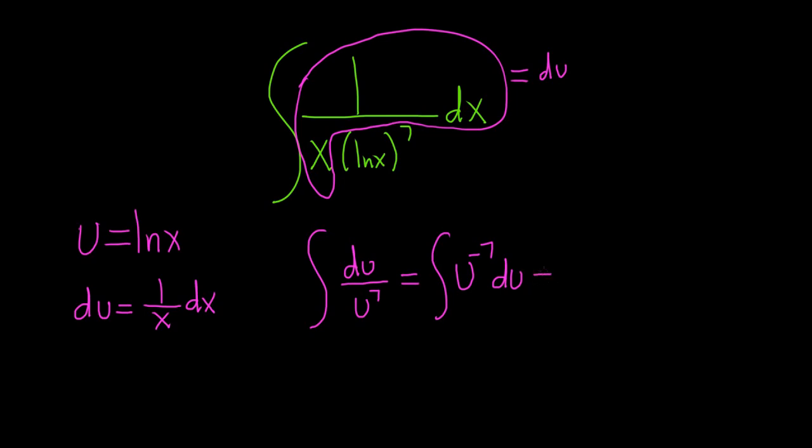So now we can integrate. Remember when you integrate, you drop the integral sign, you drop the du, and you use the power rule. So you add 1. So it's u to the negative 6, because adding 1 to negative 7 gives us negative 6, over negative 6, plus c, which is our constant of integration.